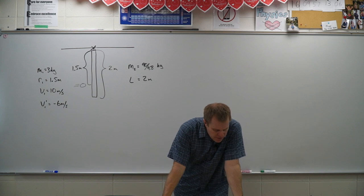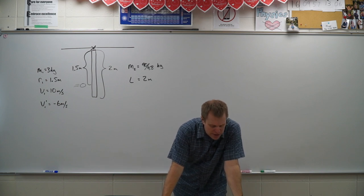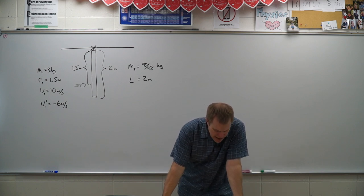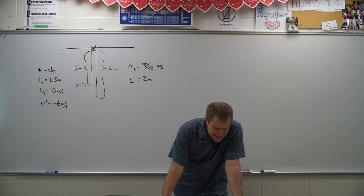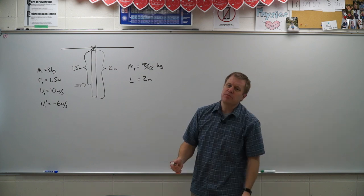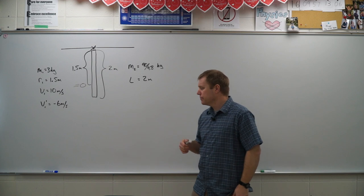Okay, so let's see what they want us to find. Find the angular speed of the bar just after the collision. And then B, during the collision why is angular momentum conserved but not linear momentum?